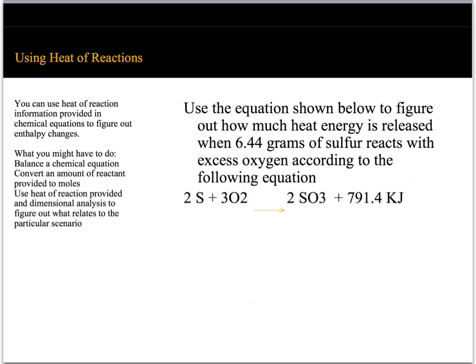We can use heats of reaction to figure out enthalpy changes. The most complicated these problems could get involves: balancing a chemical equation, converting an amount of reactant from grams to moles, then using the heat of reaction information along with dimensional analysis to figure out what the problem is asking. The example I gave has a balanced equation, and it asks us to figure out how much heat energy is released when 6.44 grams of sulfur reacts with excess oxygen.